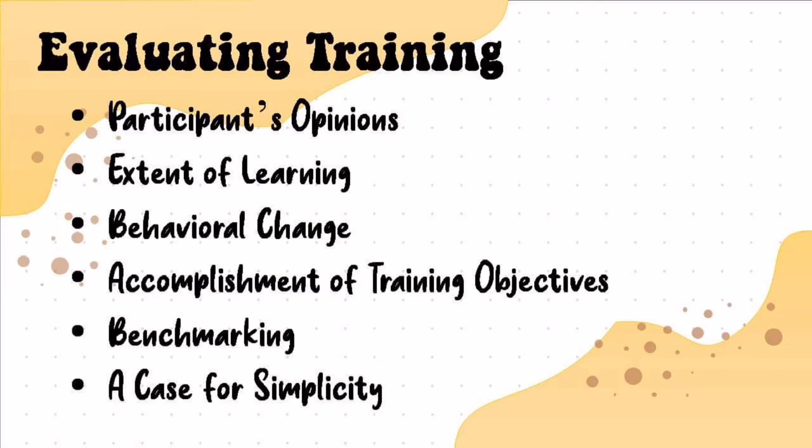Third is behavioral change. Tests may indicate fairly accurately what has been learned but they give little insight into desired behavioral changes. Through good observation of an employee's output, you can tell if something has changed or improved — for example, in productivity and attitude — and whether the training he underwent was effective.